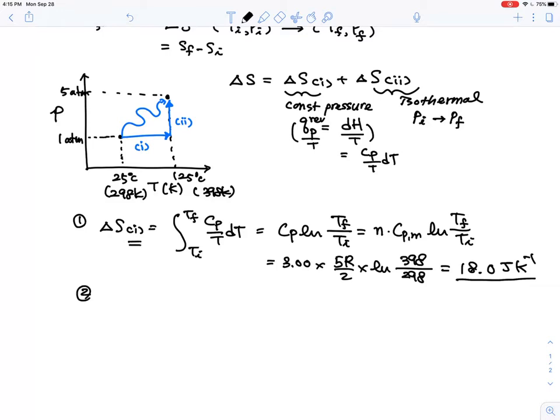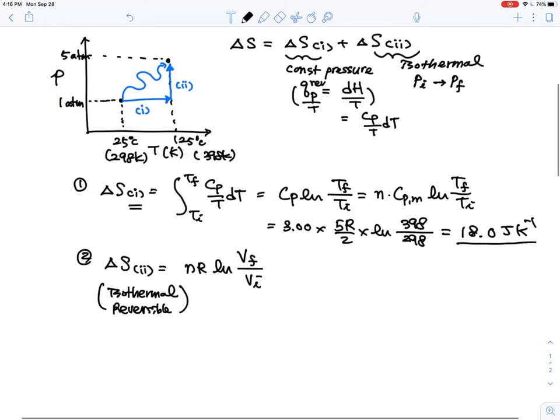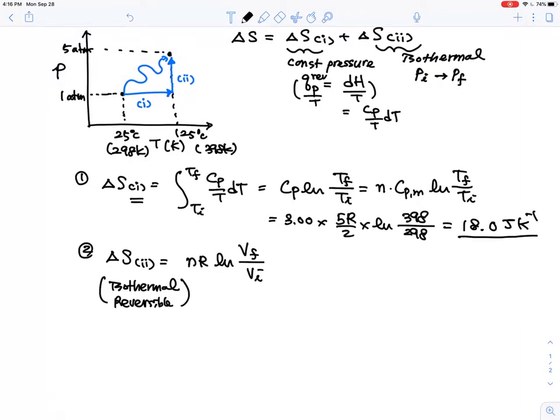For process number two, which is an isothermal process, delta S2. This is probably you'll remember the one that delta S is nR ln(V_f/V_i). This is for isothermal, actually for the isothermal process and reversible, and there is a volume change reversible. You can look at my note and the other things to figure that out. It does not depend on actually the temperature itself.